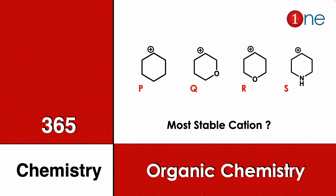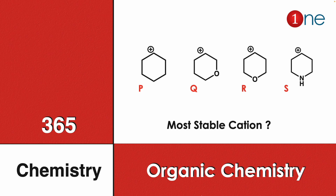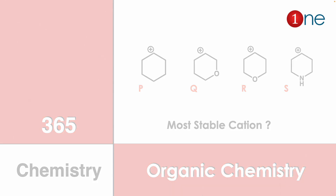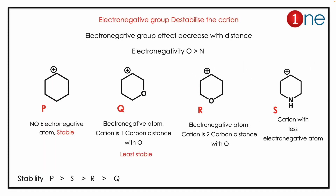Welcome to One Chemistry. This is the 365 Chemistry Series — organic chemistry questions for you. Here you have four different cations: one with cyclohexene, another with a nearby oxygen atom, a third with oxygen at a greater distance, and a fourth with nitrogen. You have to find which among the four is more stable.